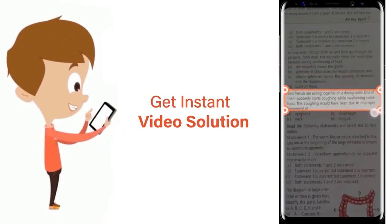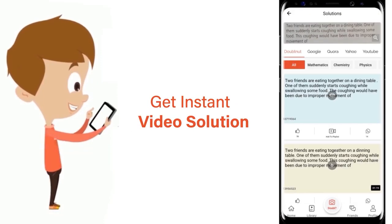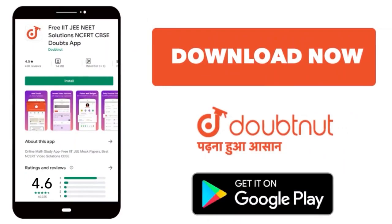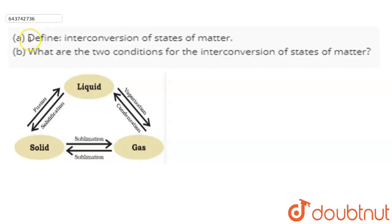Hello everyone. The question is: define interconversion of states of matter. The second part is: what are the two conditions for the interconversion of states of matter?